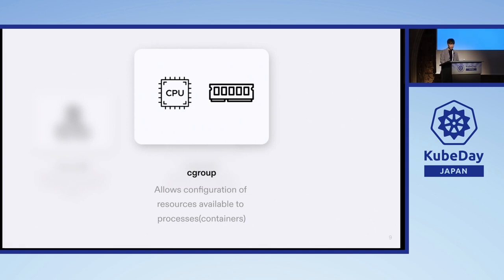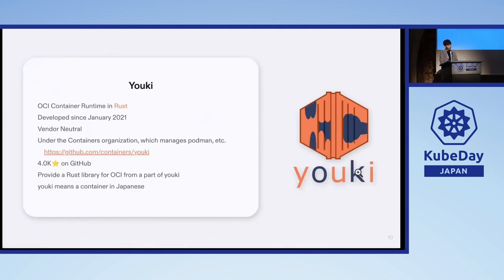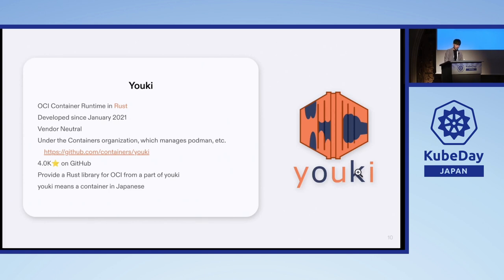Yoki is a low-level container runtime written in Rust using those features. I have been developing it as a hobby since January 2021 — about two years. It is vendor-neutral and the repository is under the 'containers' GitHub organization where Podman and other things are developed. It has more than 4,000 stars on GitHub. It is also sometimes used as a container library for Rust. Most recently, the container runtime for a Docker version used a library developed by Yoki. By the way, the name means 'container' in Japanese.